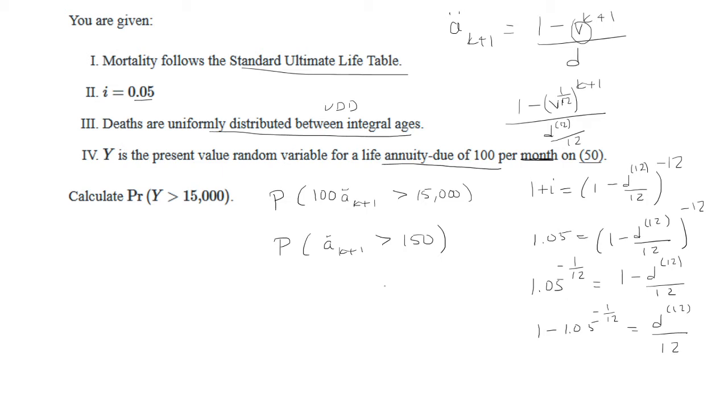Okay so now we're going to rewrite this - we have 1 minus V to the 12th. So V is 1 over 1.05, raise that to the 1 over 12 power and we're going to raise that to the K plus 1 power over 1 minus 1.05 raised to negative 1 over 12, greater than 150.